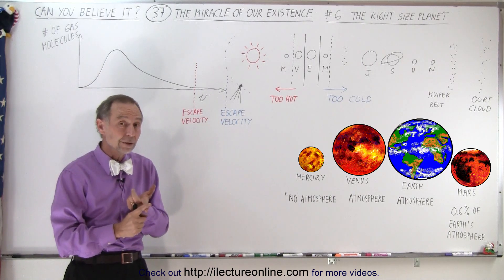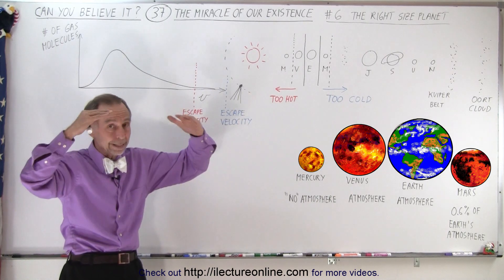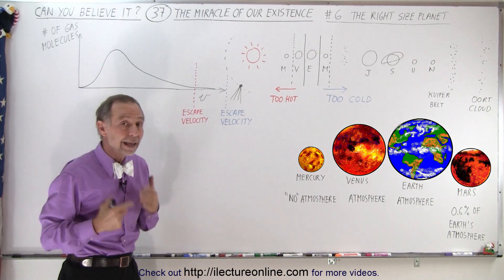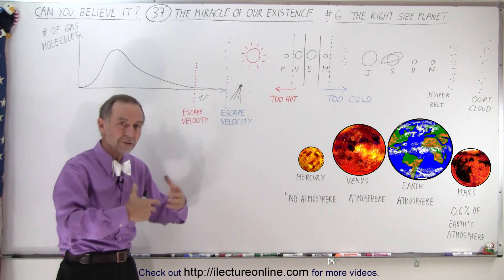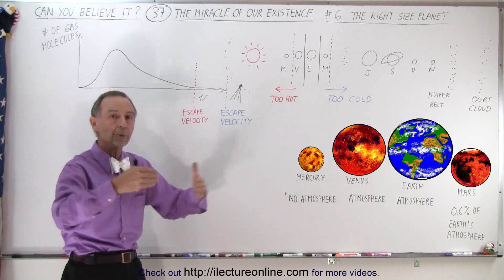So now you realize that for life to be able to exist, you need an atmosphere. For an atmosphere to exist, you need the planet to be the right size, and you need the temperatures to be comfortable for liquid water to be able to exist, and for life to live within the comfortable range of temperatures.